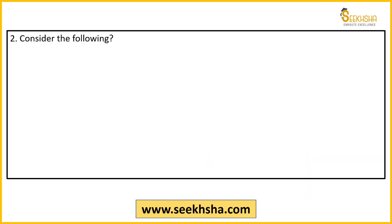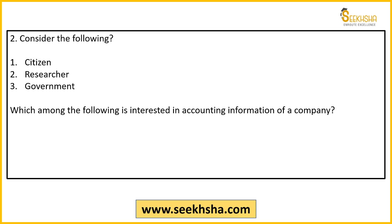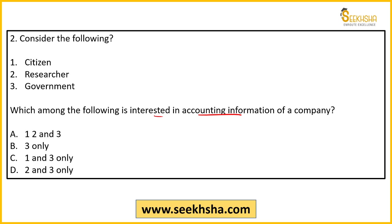Second question पर आ जाओ — बहुत अच्छा question है। Consider the following: 1) citizen, 2) researcher, 3) government। Which among the following is interested in accounting information of a company? कितना basic question है, लेकिन paper के अंदर अगर यह question आ जाए तो बच्चों को confuse कर देता है क्योंकि paper में pressure होता है — pressure जो है वो आसान questions को भी मुश्किल बना देता है।